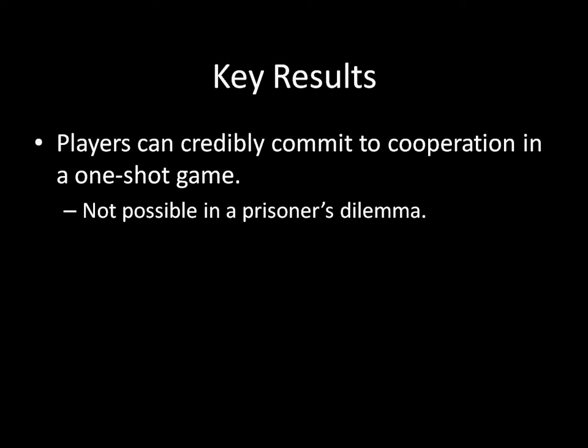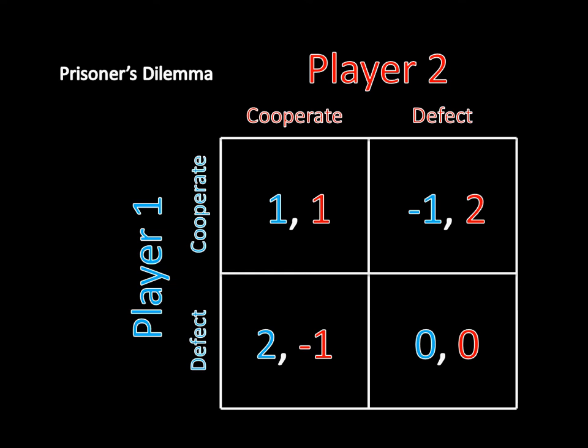The most important result is that players can now credibly commit to cooperation in a one-shot game — and this was not possible in a prisoner's dilemma. We saw that players can end up cooperating in a prisoner's dilemma if we have a long shadow of the future and they can threaten mutual defection and mutual punishment in the future if there's any deviation from cooperation up front. But that's not possible in a one-shot game. This is something we've done before, so it should be a review.